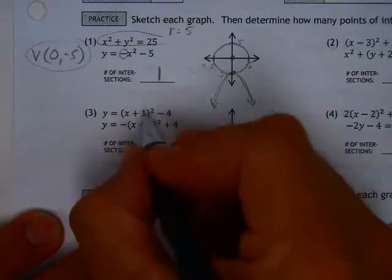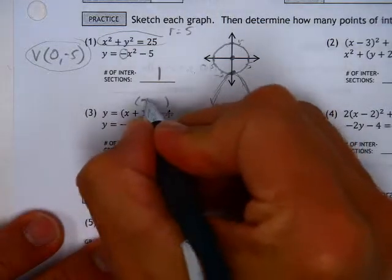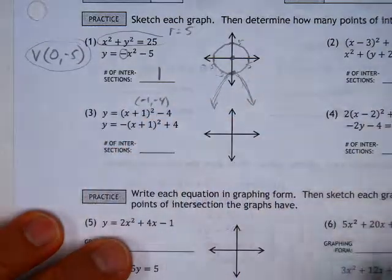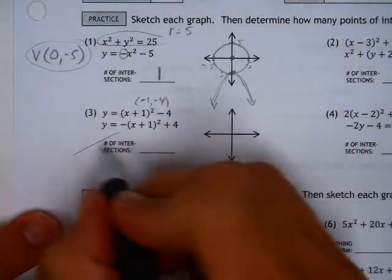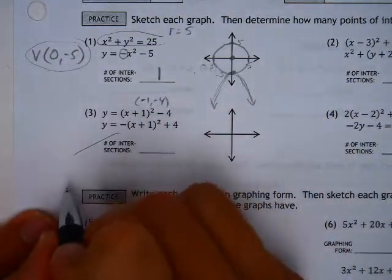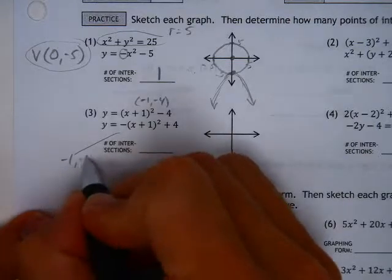So two parabolas, one's got a vertex at negative 1, negative 4, and the other one has a vertex at negative 1, negative 4.